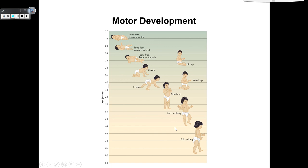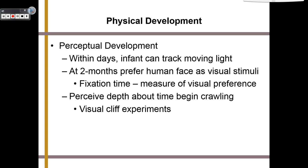When talking about perceptual development, we know that within days, infants can track moving light, and that by two months, infants prefer human faces as visual stimuli. We know this by measuring their fixation time — how long they would stare at specific visual stimuli. We also know that they perceive depth about the time that they begin crawling, which is absolutely an evolutionary advantage, which brings us to the visual cliff experiment.